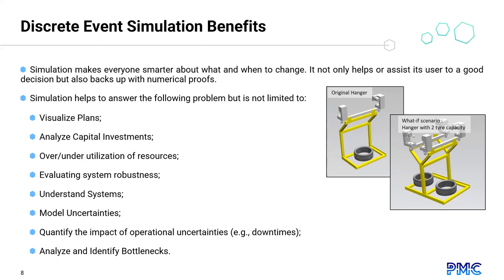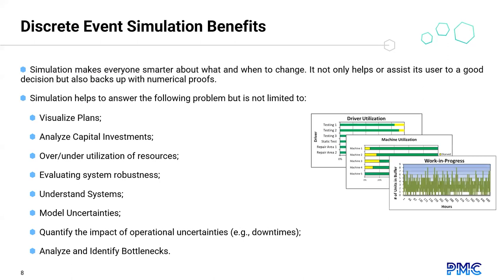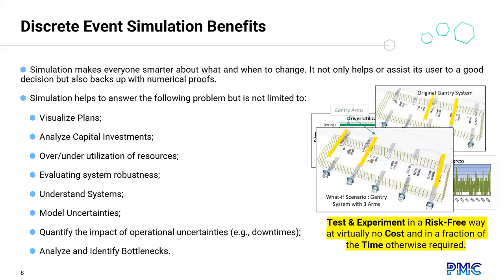What are the benefits of using this type of simulation? First, simulation makes everyone smarter about what and when to change, because it not only helps users make good decisions but backs them up with numerical proof. Simulation helps visualize plans, analyze capital investments, analyze over- and under-utilization of resources, evaluate system robustness, model uncertainties, quantify the impact of operational uncertainties — including maintenance data like MTTR, MTBF, and downtimes — and identify bottlenecks. It allows testing in a risk-free way at virtually no cost and in a fraction of the time otherwise required.